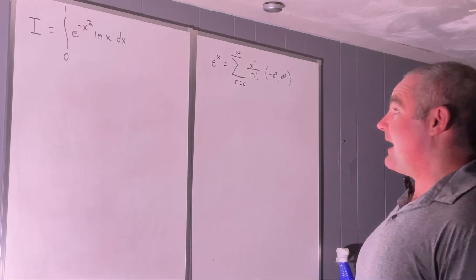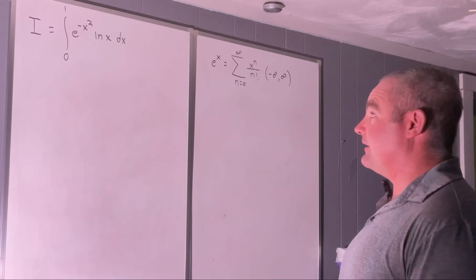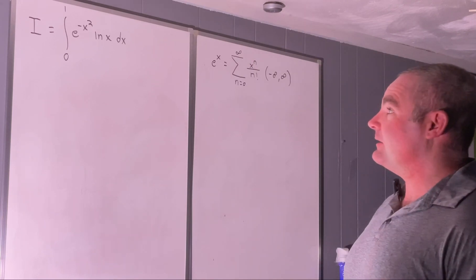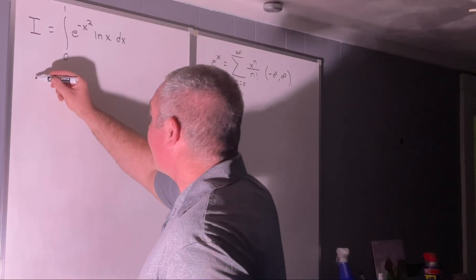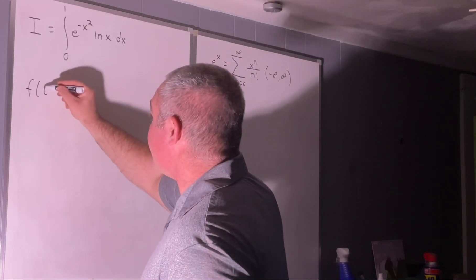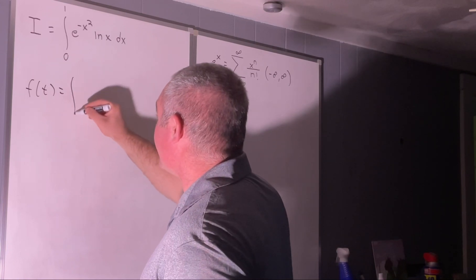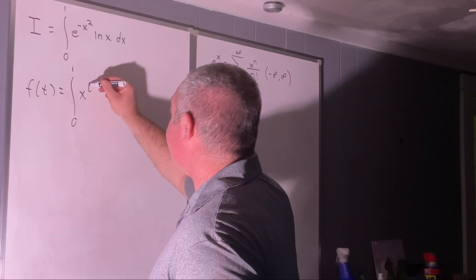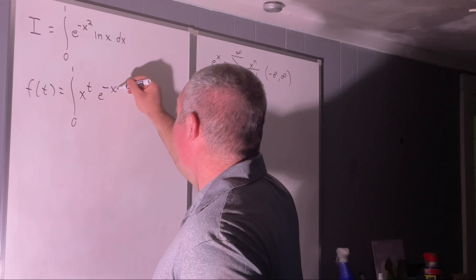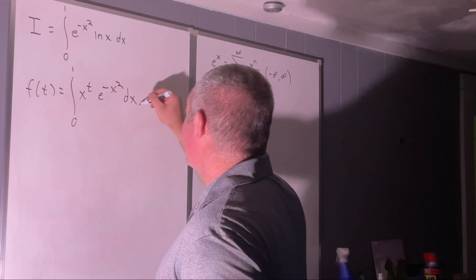Because that really helps us recover that natural log x when you use the Leibniz rule to differentiate under the integral sign. So, we're going to create a function of t equal to the integral from 0 to 1 of x to the t e to the negative x squared dx.